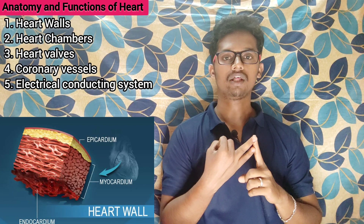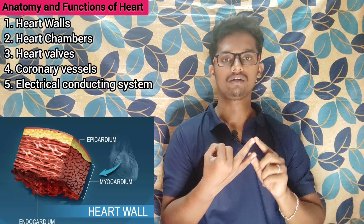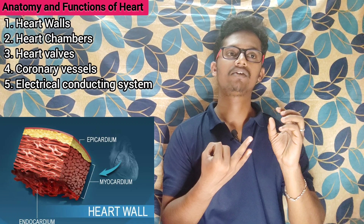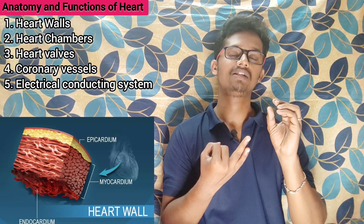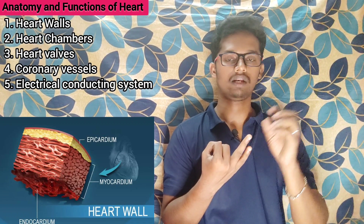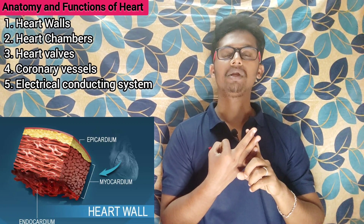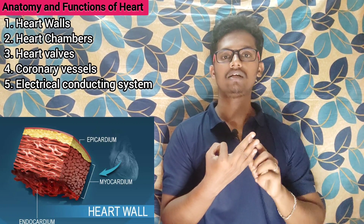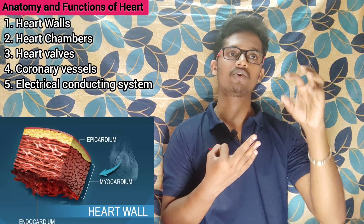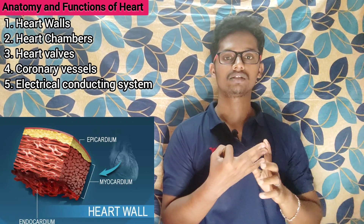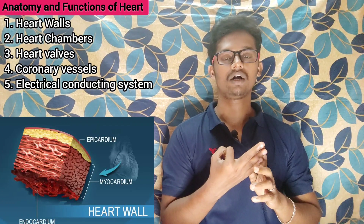The second one is myocardium. 'Myo' means muscular, so this layer is completely muscular and is present between the two layers — the outer and inner layer. The third one is epicardium. 'Epi' means outside, so it is the outermost layer of the heart wall.